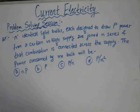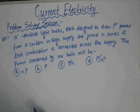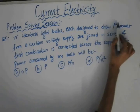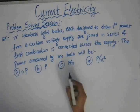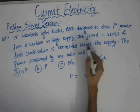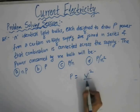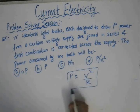In this problem, we have N identical light bulbs each designed to draw power P from a certain voltage supply. These bulbs are joined in series and connected across the supply. We need to find the power consumed by one bulb. The rating for a single bulb is P = V²/R, where V is the supply voltage and R is the resistance of a single bulb.